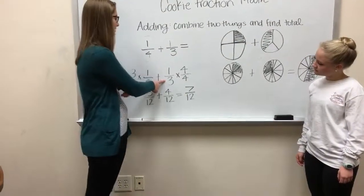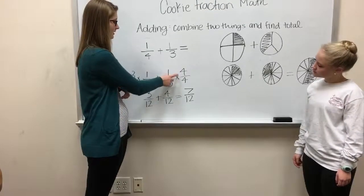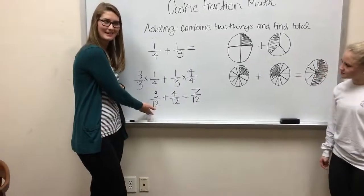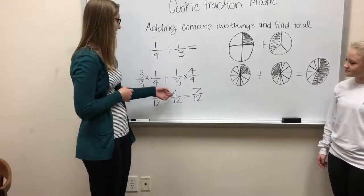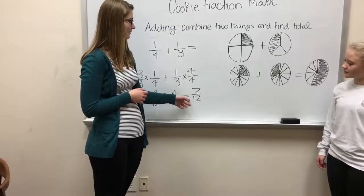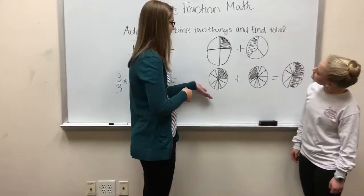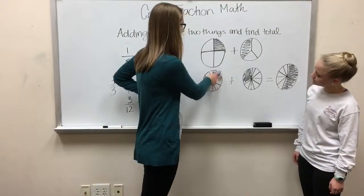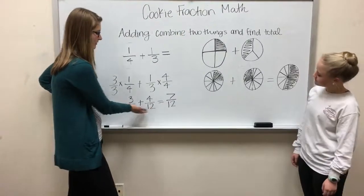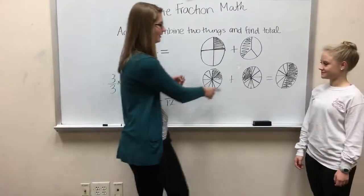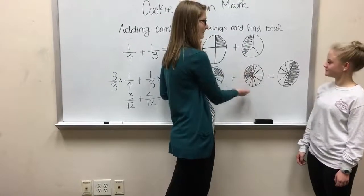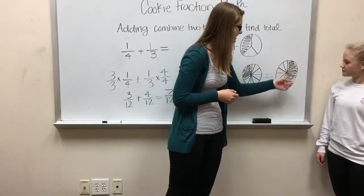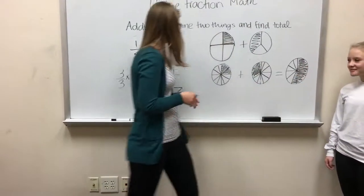For this one, you multiply everything by four. So one times four is four, and three times four is twelve. So now you have a common denominator. Then all you have to do is add across your numerators, which gives you seven over twelve. In our pictures, you still have the same amount shaded in — you have three pieces out of twelve, and four out of twelve pieces, still the same amount shaded. Then you combine everything: you have seven pieces out of twelve, which is your final answer.